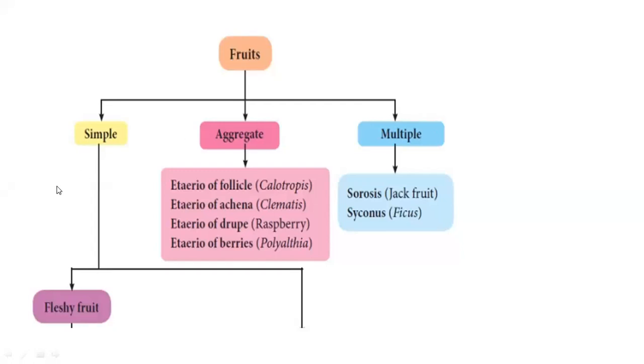Simple fruit is just apple, simple fruit. Aggregate fruit is a lot of flowers. The entire inflorescence of fruit is multiple fruits.